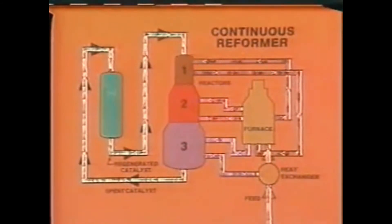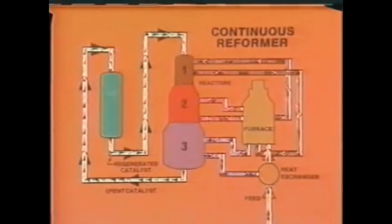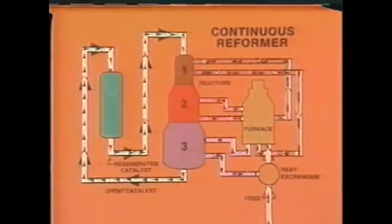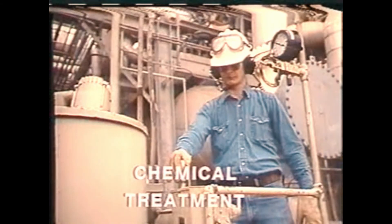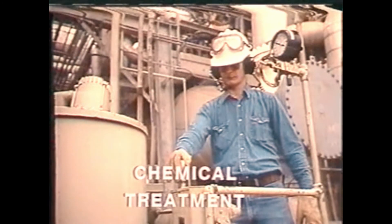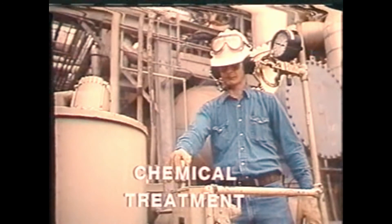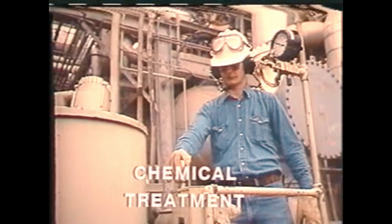A third way to regenerate the catalyst is with a continuous reformer. With this method, a portion of the catalyst is continuously removed to a separate regenerator, where it is cleaned and then returned to the system. Catalyst regeneration usually involves more than just burning off the coke — the catalyst is also treated with chemicals to help restore it to its original activity. This treatment will vary depending on the type of catalyst that is being used.